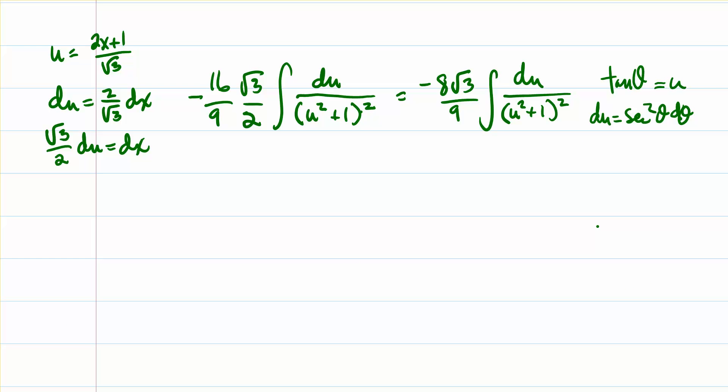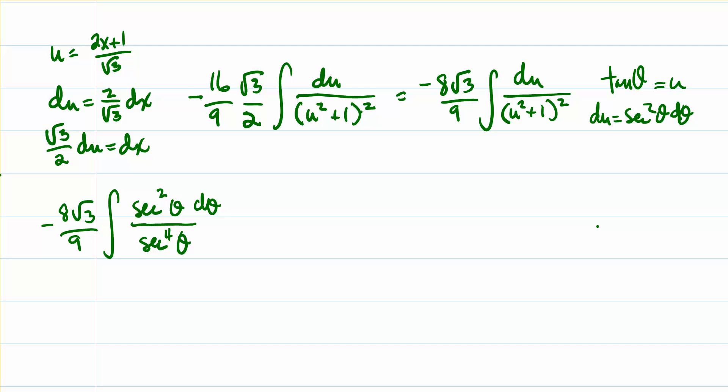So what we're going to do now is substitute tan θ for u. We're going to end up with tan² θ + 1 in the denominator, which can also be written as sec² θ. Sec² θ squared gives us sec⁴ θ in the denominator. The numerator is going to be sec² θ — that's the du swapped out with sec² θ dθ.